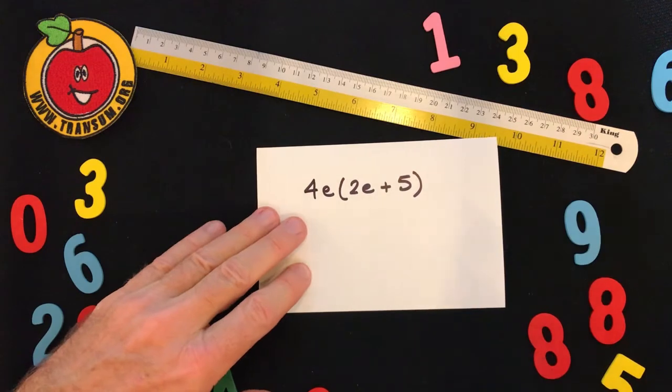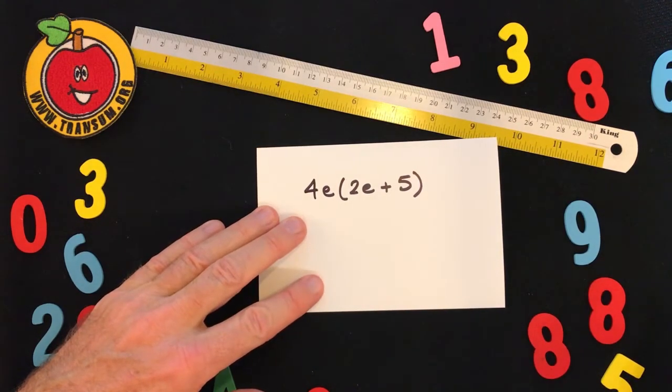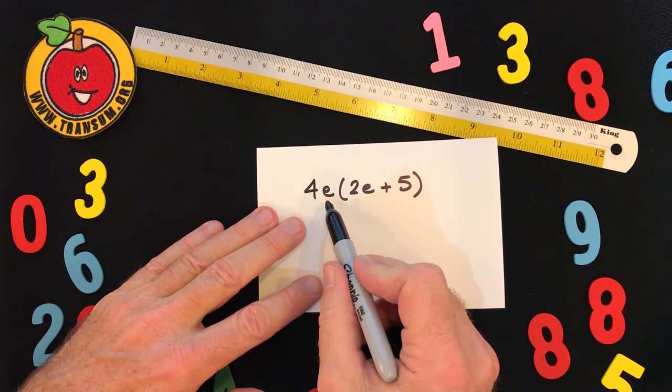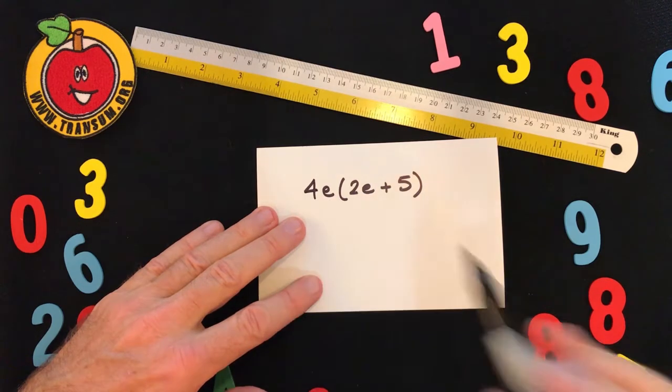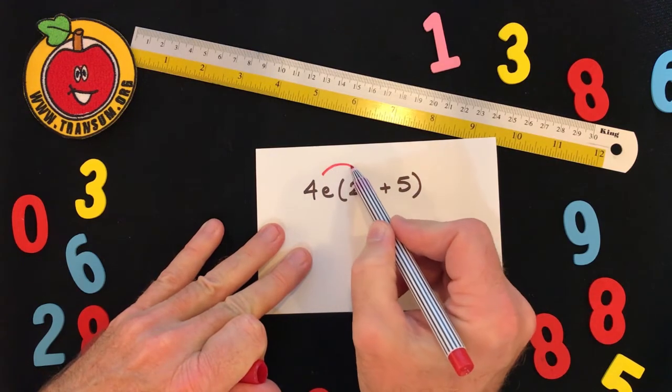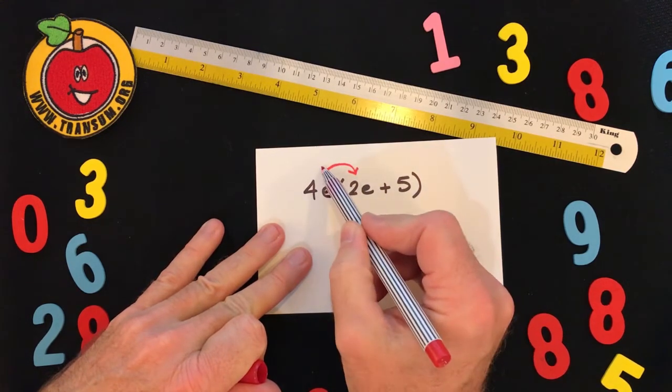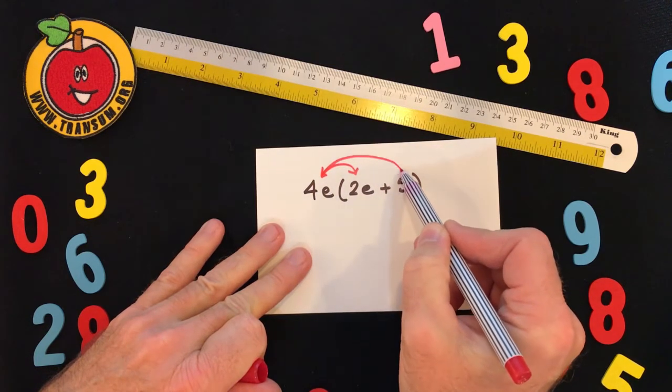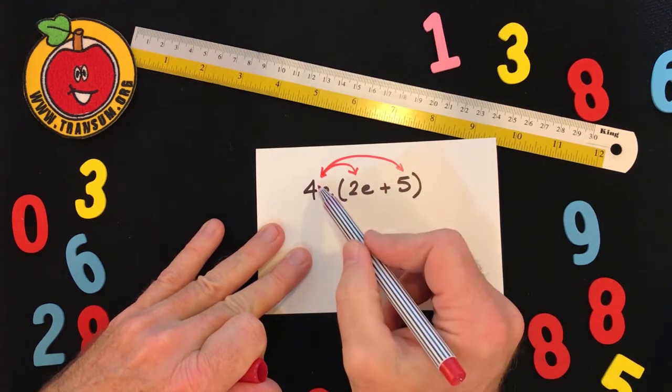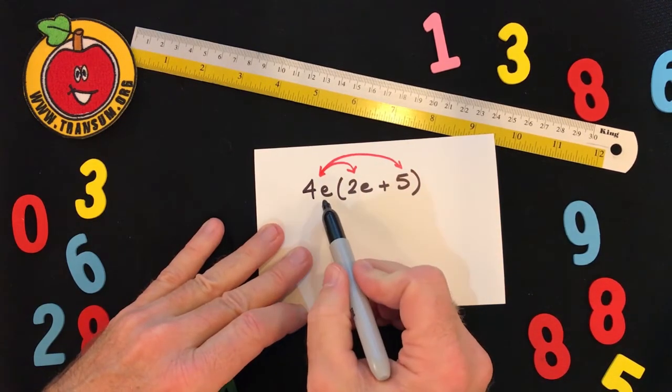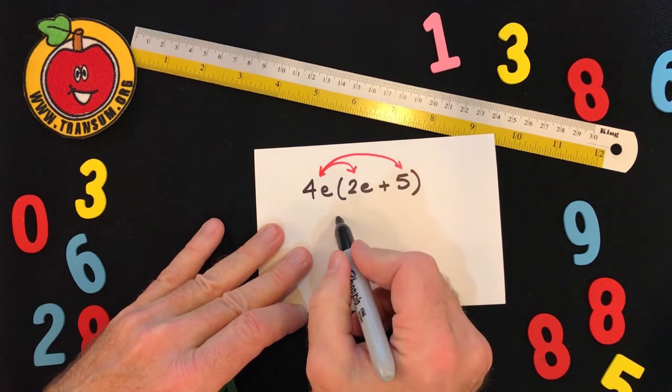Right, we might get a more complex term outside the brackets. This one, there is a 4e outside, and that has to multiply both the 2e and the 5. So I'll again draw my little arrows to show the pairs of terms that are being multiplied together, and then go ahead and do the multiplication.